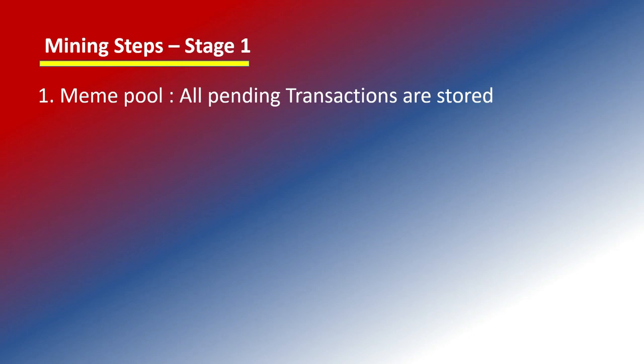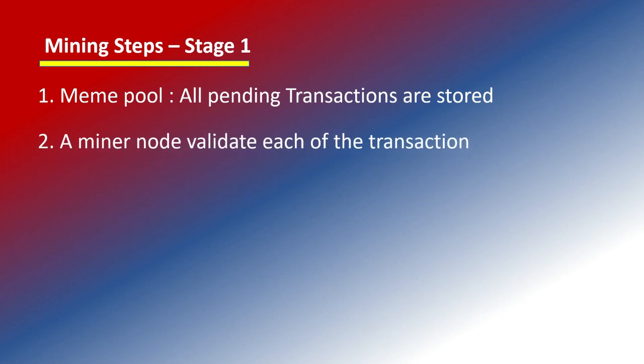Stage one: in the Bitcoin network, transactions are registered on the network. These transactions are grouped into a block. Before this block is created, the transactions are held temporarily — that location is called the mempool. All pending transactions are validated and the block is created.